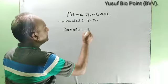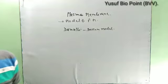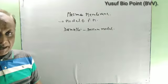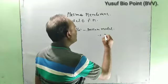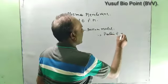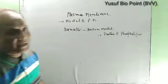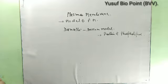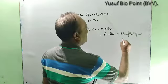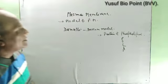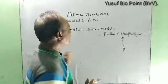This model is the Danielli-Davson model. According to this model, the plasma membrane is composed of protein and phospholipids. The phospholipids are in the middle and on both sides there is protein. The lipid contains two parts.